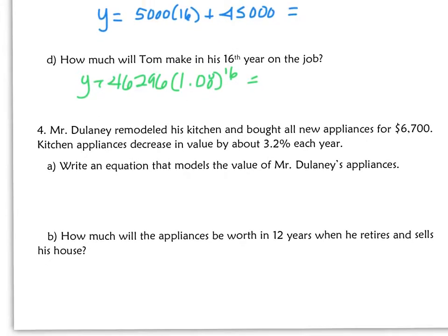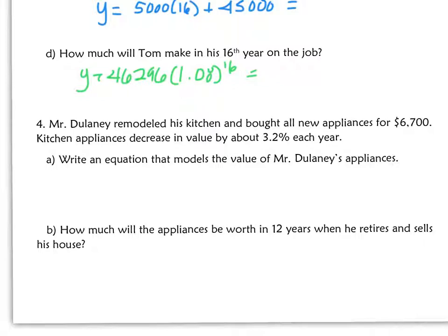Mr. Delaney remodeled his kitchen and bought all new appliances for $6,700. The kitchen appliances decrease in value by about 3.2% a year. So that's shrinkage, right? Write an equation that models the value of Delaney's appliances. Well, first of all, what we want to do is figure out what our multiplier is. It says we're shrinking at 3.2% per year. So it would be 100 minus 3.2 over 100 to equal .968. That's our multiplier, or our rate of change.